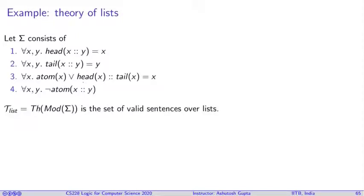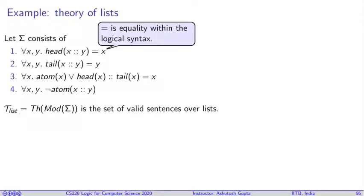Now using these four axioms I can talk about all sorts of facts about lists. So this is what we can call a theory of lists. The sentences in the list may not be true on non-list structures, but the sentences are true on the list structures.